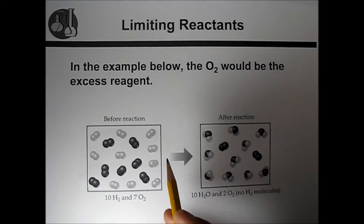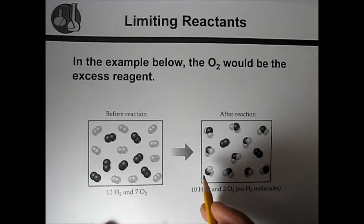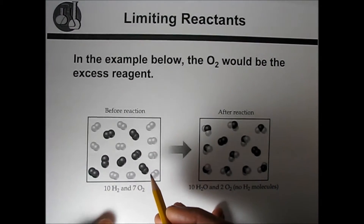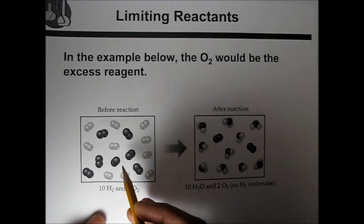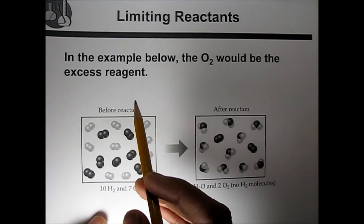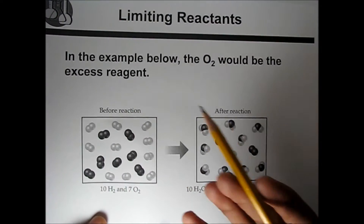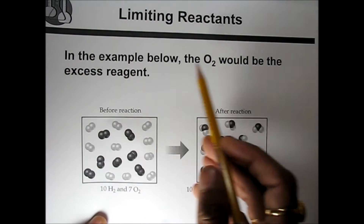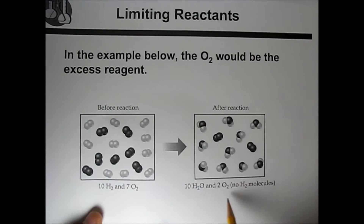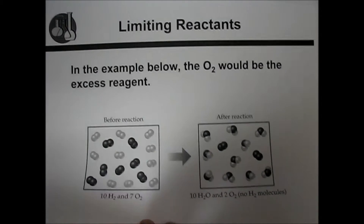Continuing the same example: if hydrogen is the limiting reactant, then what is the excess reagent? The excess reagent is oxygen — four oxygen atoms are in excess here.